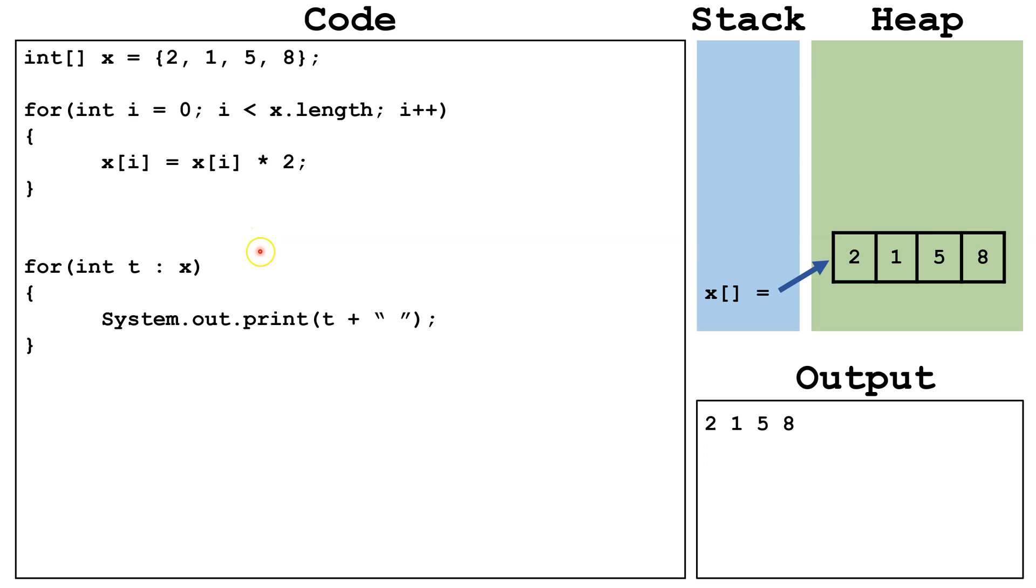A for each loop will go through one time for each index in an array. Each time it goes through, the temporary variable will hold the value inside each of the indexes. So the first time through, t will hold 2. The second time through, it will hold 1, and so on. So let's trace this out.